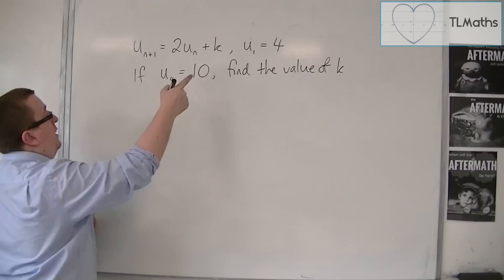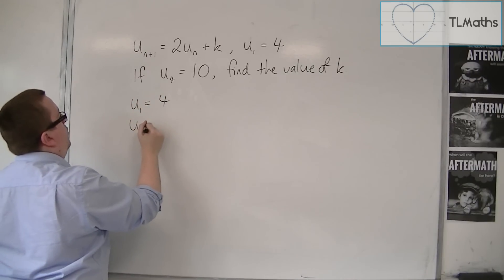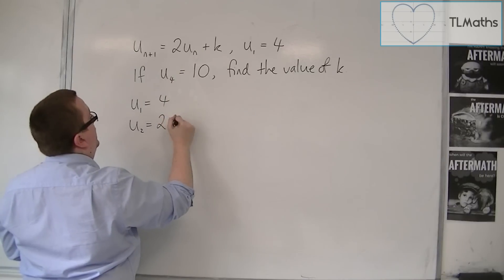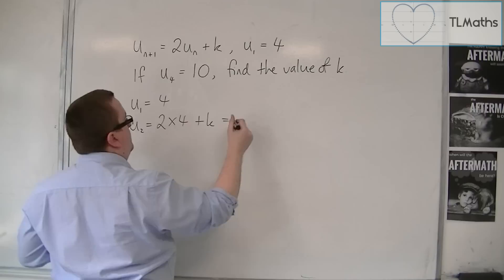So, first of all, I know that u1 is equal to 4, and I can work out u2 by doing 2 lots of the previous term, plus k. And so we're going to get 8 plus k.